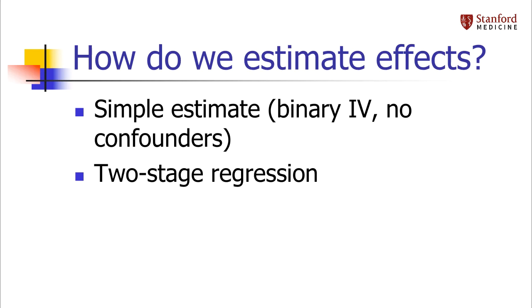Now I'm going to explain how we exploit instrumental variables to estimate unconfounded effects. I'll start by deriving a simple estimate that you can calculate by hand, just to motivate how this works. In practice, we don't do this by hand — we use a two-stage regression model. I'll explain what that is in a bit.